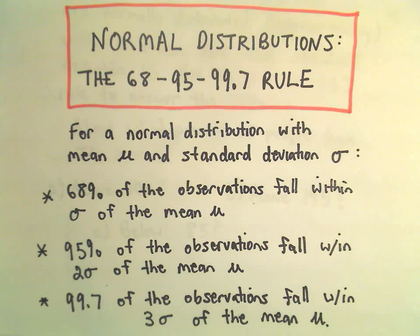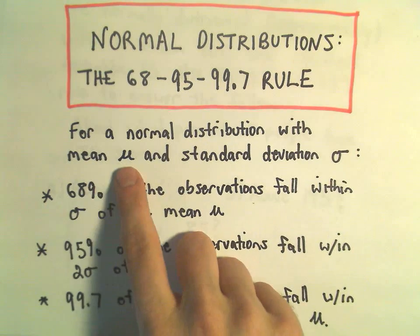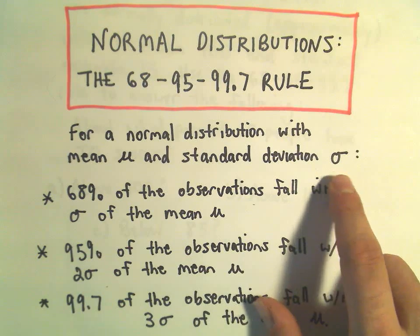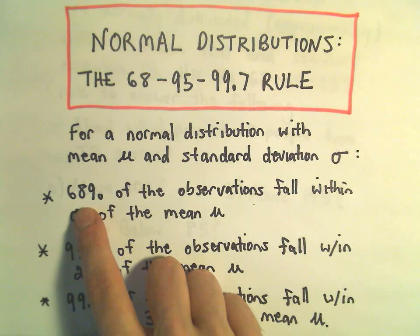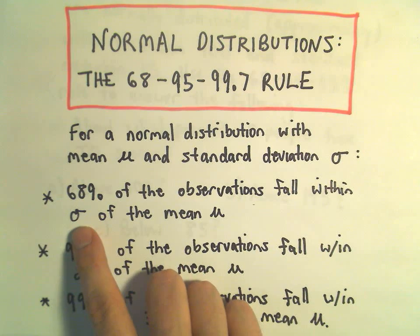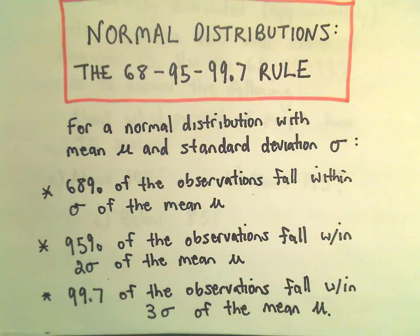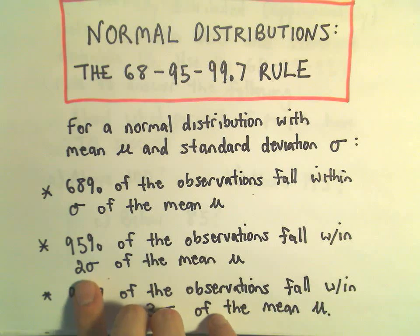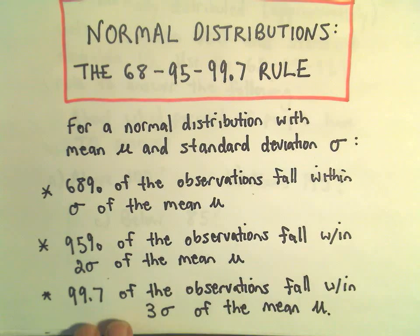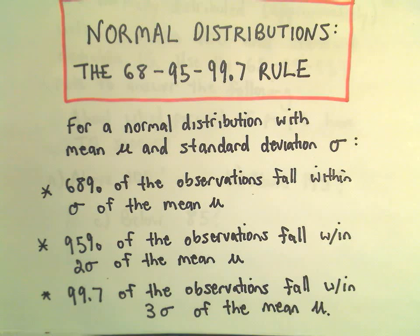In this video I'm going to talk about the normal distribution, specifically what's known as the 68-95-99.7 rule for normal distributions or bell curves. If you have a normal distribution with a mean mu and a standard deviation of sigma, 68% of the observations fall within one standard deviation of the mean, 95% fall within two standard deviations, and 99.7% fall within three standard deviations.